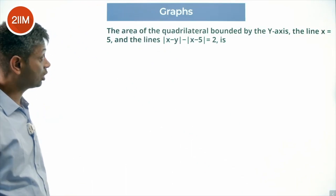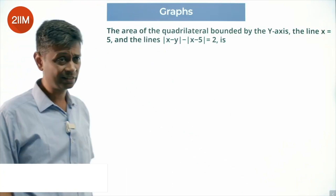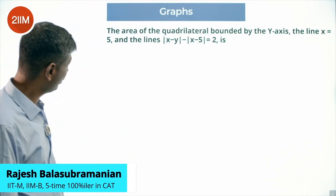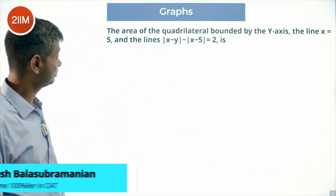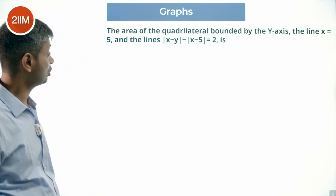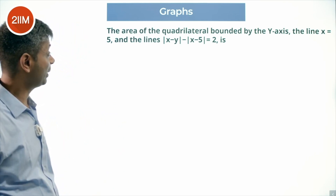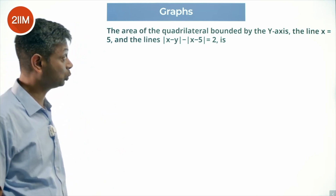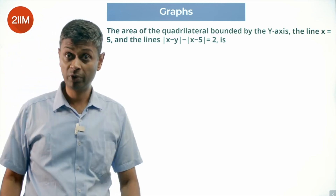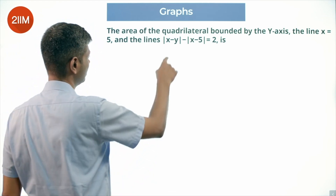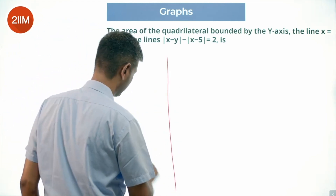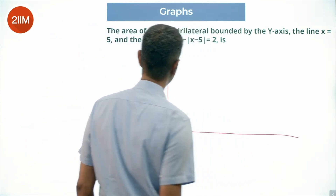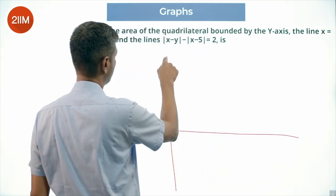The area of the quadrilateral is bounded by the y-axis, the line x = 5, and the line |x - y| - |x - 5| = 2 is... a nice, challenging question. Let's draw the coordinate axis.